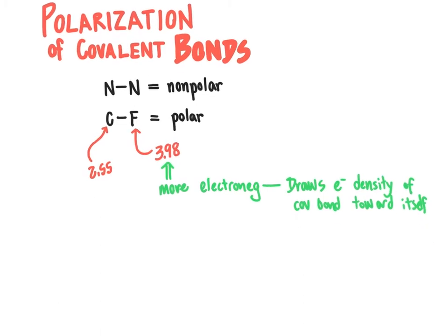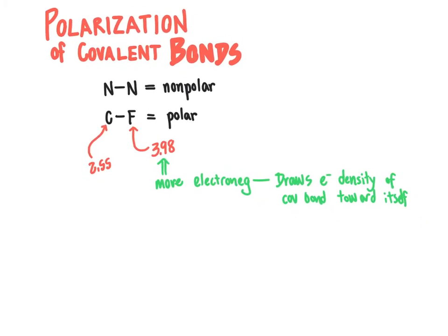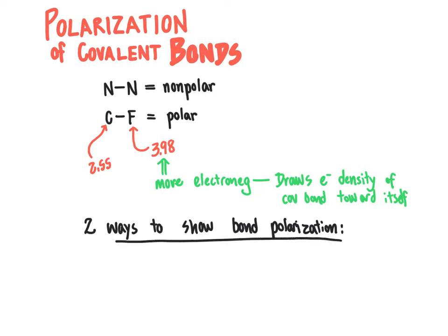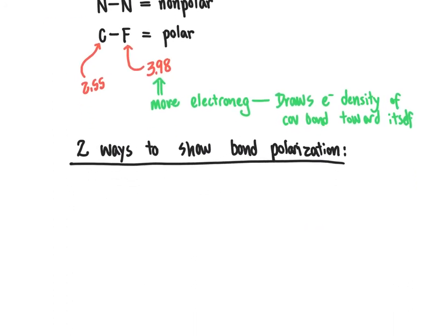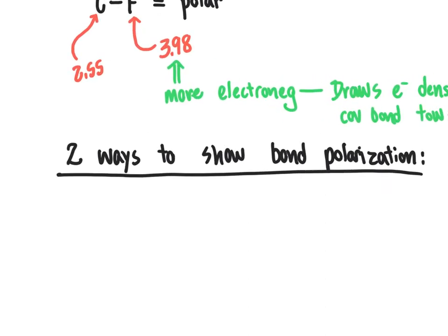To represent the polarization of covalent bonds, there are two ways to show which of the two atoms takes the lion's share of electrons from that covalent bond. Those two ways are: using a delta positive and delta negative sign, or using a covalent bond arrow that indicates which atom is positively polarized and which is negatively polarized. These are our two ways to show bond polarization. The negatively polarized atom is going to be the more electronegative of the two atoms involved in the covalent bond.